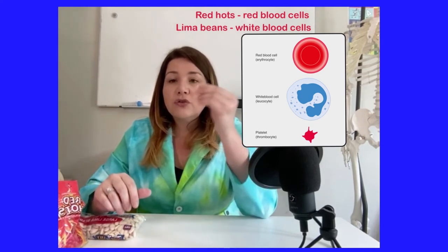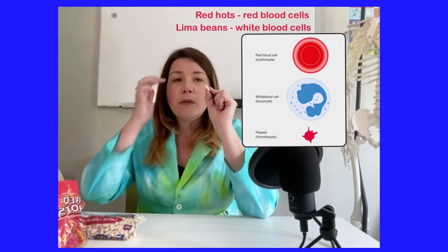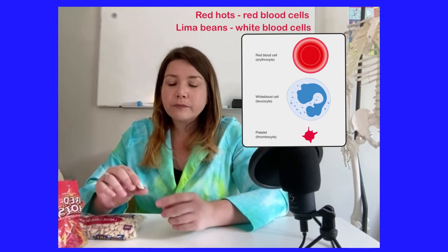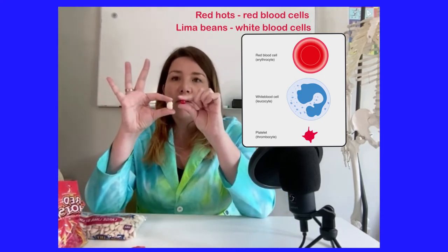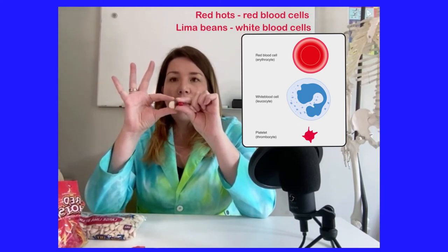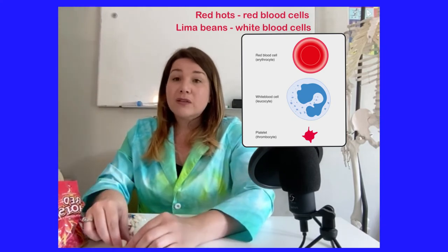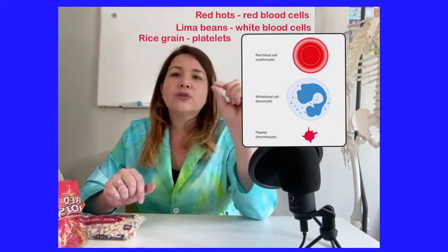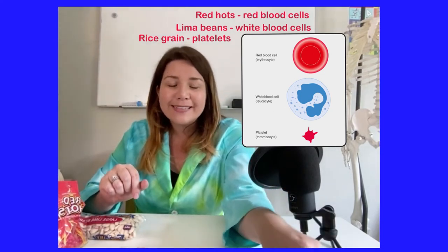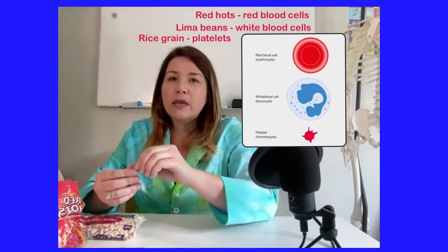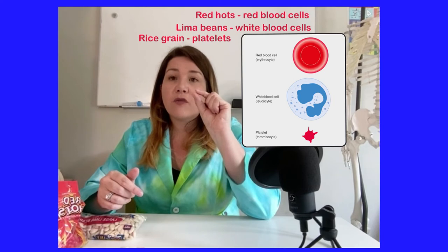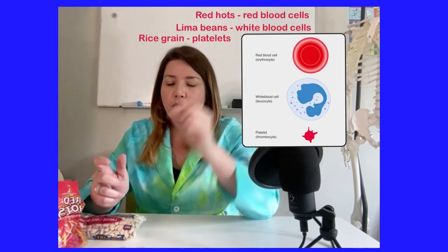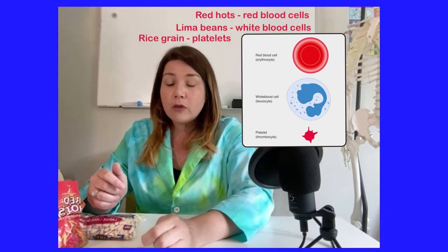White blood cells do have a nucleus — you can see a purple part inside them, and different types look different from one another. White blood cells are actually bigger than red blood cells, so we're going to use lima beans to represent them. And then the grain of rice is going to represent platelets, because platelets are just tiny pieces of a cell that exploded and are full of vesicles so they can be activated to form blood clots. They're very small — you can use white or red sprinkles as well.